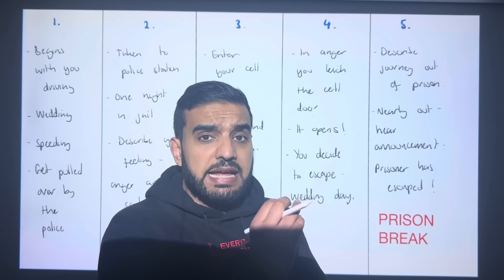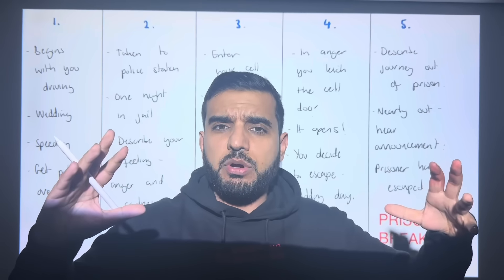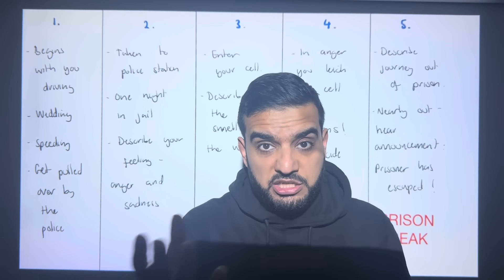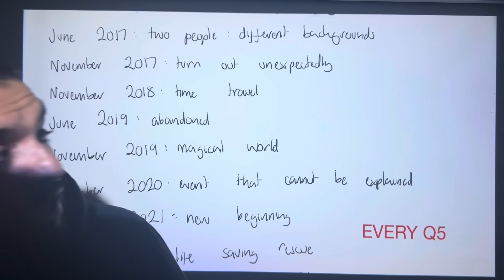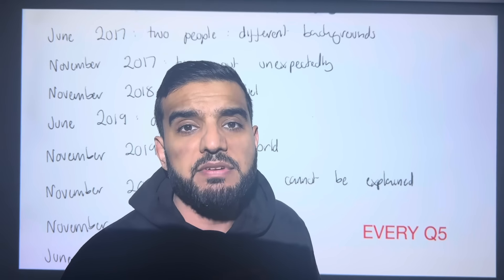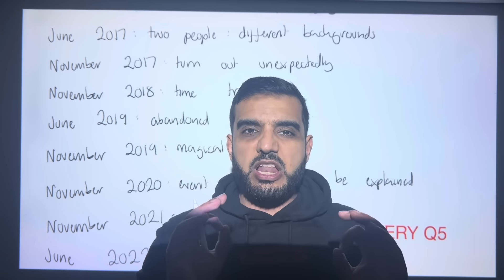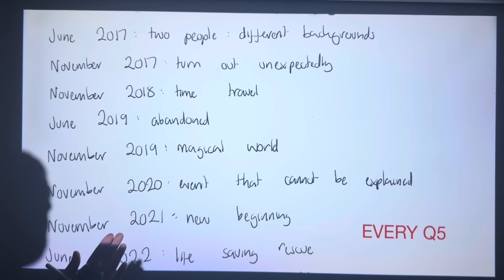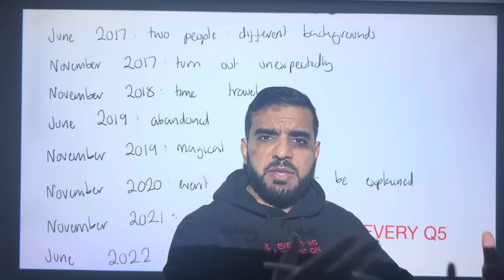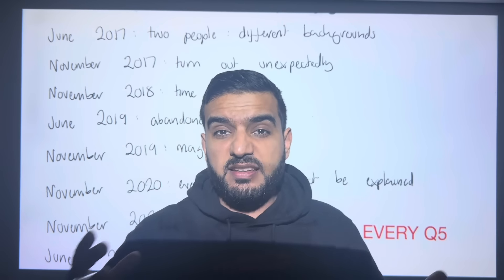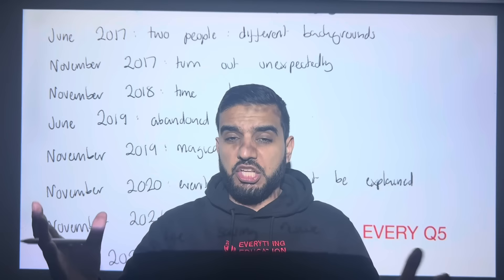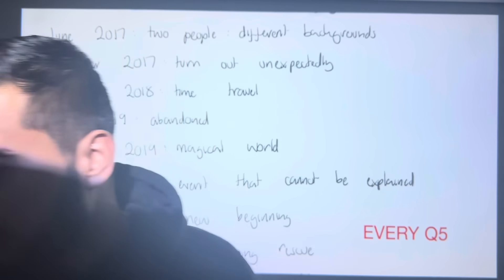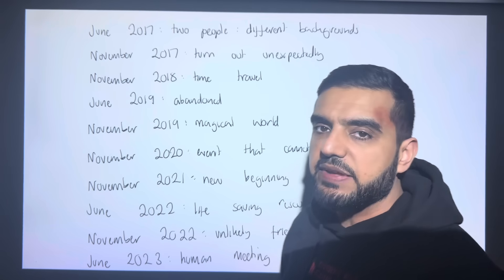You decide to escape. In paragraph five, you describe your journey out of the prison — you're nearly out when the alarms and sirens go off and an announcement is made that a prisoner has escaped. How does it end? Do you escape, do you get caught? To apply it: 'Two people from different backgrounds' — in your cell you have an inmate who's an absolute criminal while you're in a tuxedo. 'Time travel' — your modern car and everything perfect contrasts with the old-fashioned, stinking prison, like going back in time. 'An event that cannot be explained' — you don't understand how you got here.